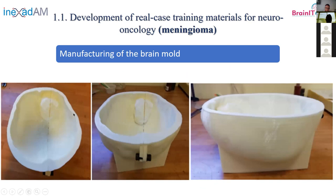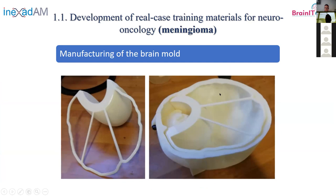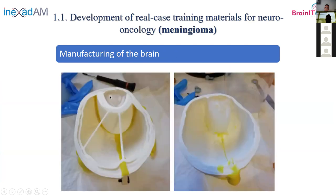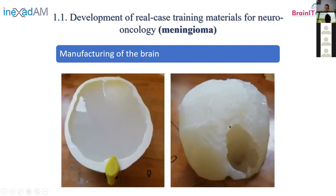We wanted to pour the softer silicone around the tumor and use the standard silicone for the rest, so we made this part of the mold. This is the brain mold in two parts, and you can see this additional part of the mold that allows us to pour the softer silicone. When that silicone cures, we remove the insert and pour the rest — the standard silicone. Here you can see the first pouring — the softer silicone surrounding the hollow of the tumor — and after the second pouring, this is the final brain without the tumor.